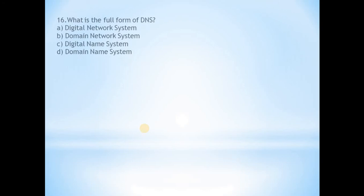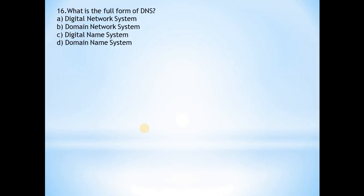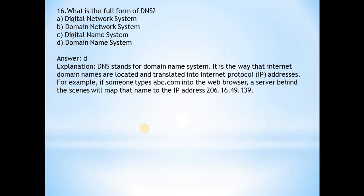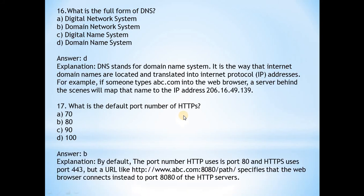Question 16: What is the full form of DNS? Answer is d, Domain Name System. It is the way that internet domain names are located and translated into Internet Protocol IP addresses. For example, if someone types abc.com into the web browser, our server behind the scenes will map that name to the IP address. Question 17: What is the default port number of HTTP? Answer is b, the default port number is 80, and HTTPS uses port number 443.